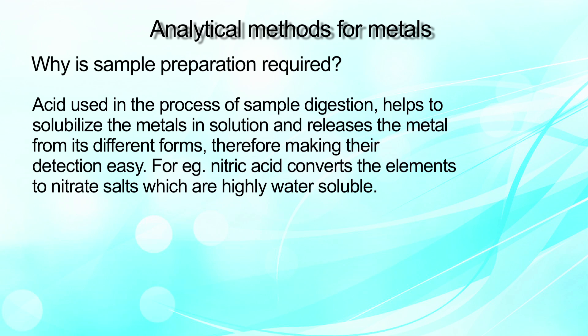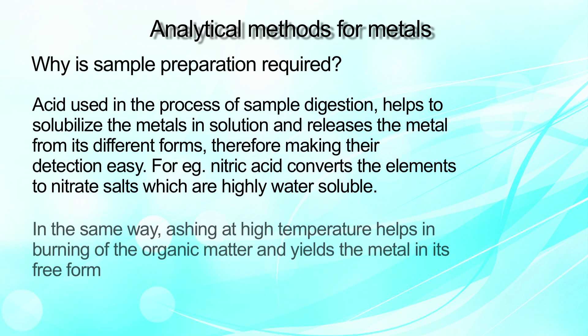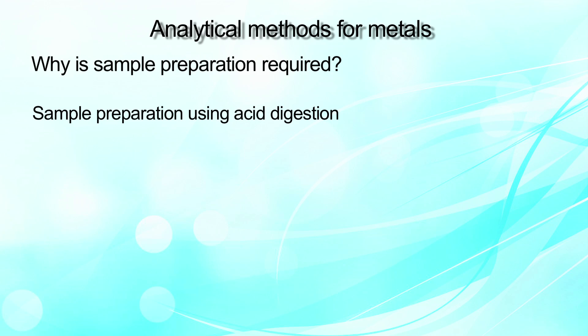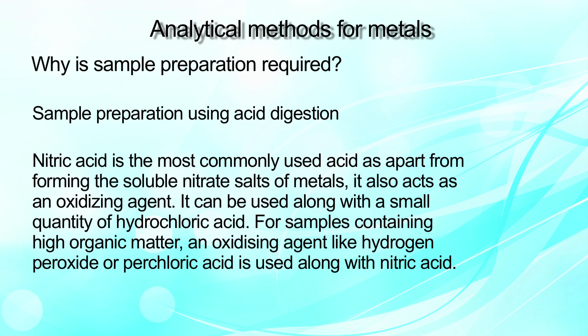For example, nitric acid converts elements to nitrate salts, which are readily soluble in water and therefore can be detected very easily. Similarly, ashing at high temperature burns the organic matter and yields the metal in its free form. Nitric acid is the most commonly used acid — apart from forming soluble nitrate salts of metals, it also acts as an oxidizing agent. It can be used along with a small quantity of hydrochloric acid, and for samples containing very high organic matter, an oxidizing agent like hydrogen peroxide or perchloric acid helps alongside nitric acid.